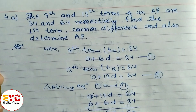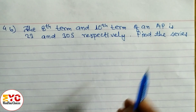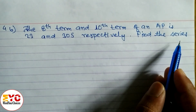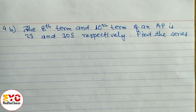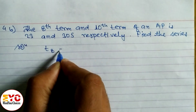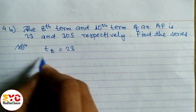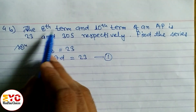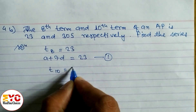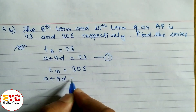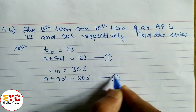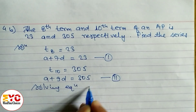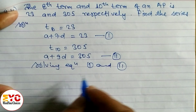Now look at question 4b. The 8th term and the 10th term of an AP are 23 and 305 respectively. We need to find the series, meaning three to four terms. So T8 equals 23 gives us a plus 7d equals 23 — equation 1. T10 equals 305 gives us a plus 9d equals 305 — equation 2. Solving equations 1 and 2 will give us values of a and d.